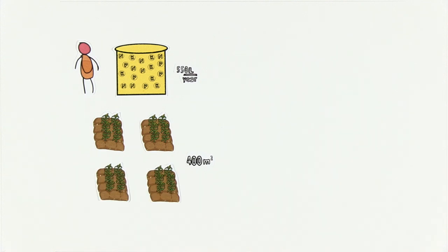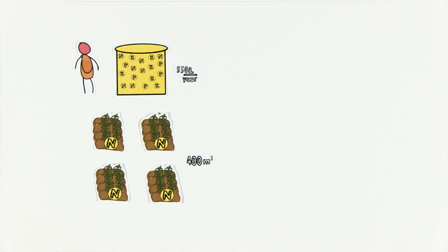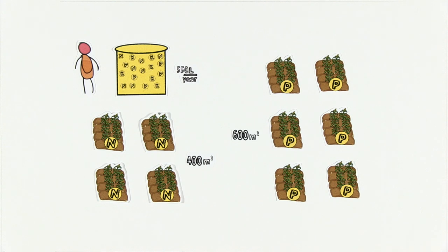The yearly urine production of one person could fertilize 400 square meters of land per year, if urine is to be used as a nitrogen fertilizer. If the goal is to replace the phosphorus, 600 square meters would be the potential fertilization area.